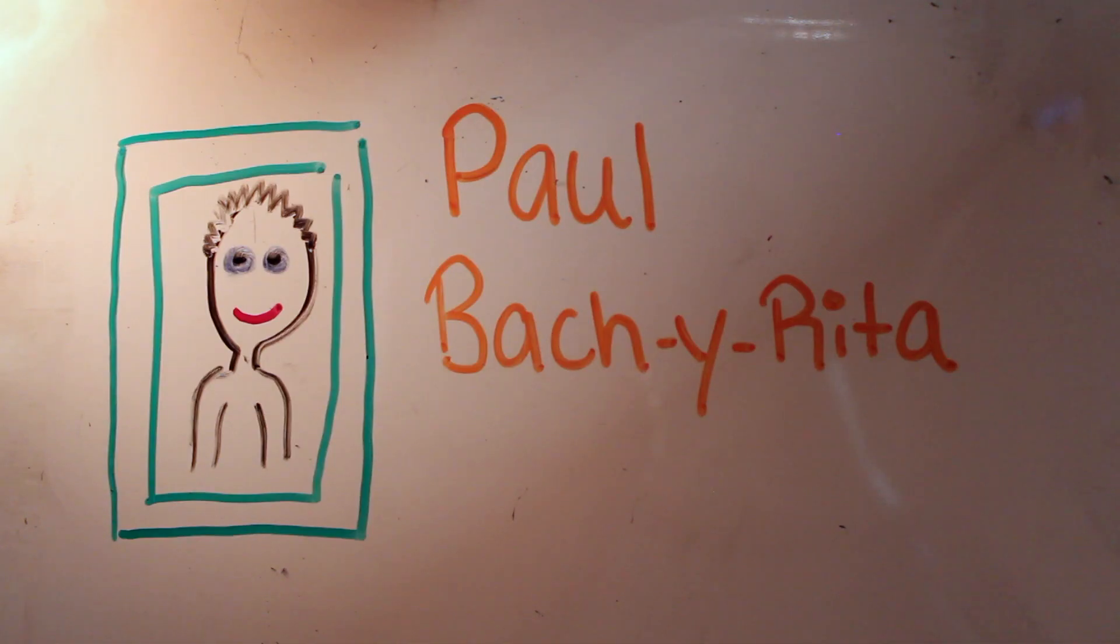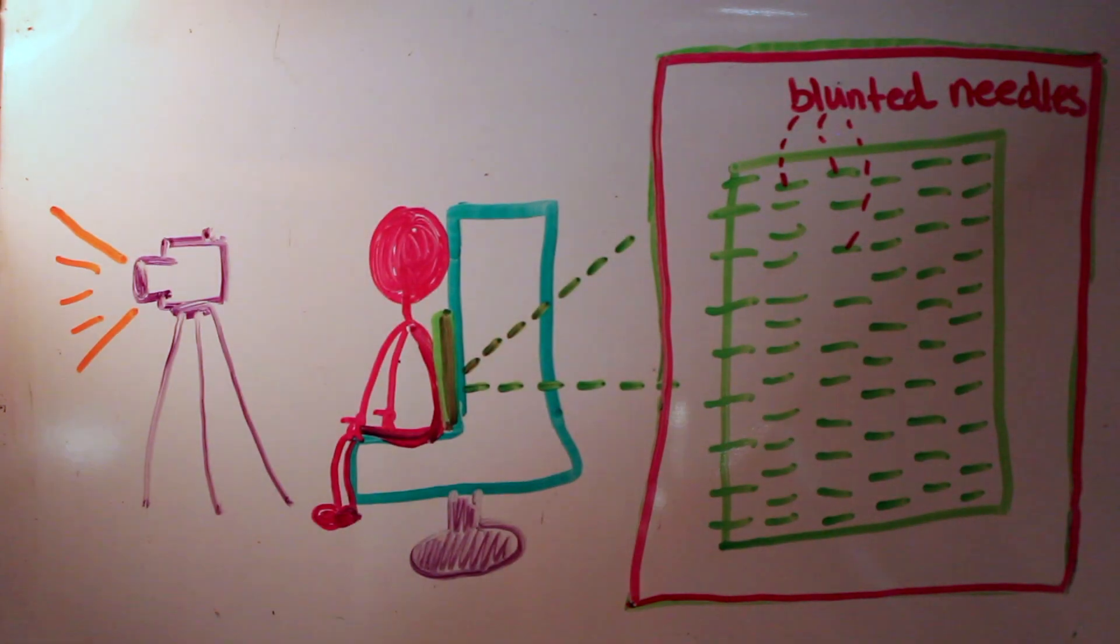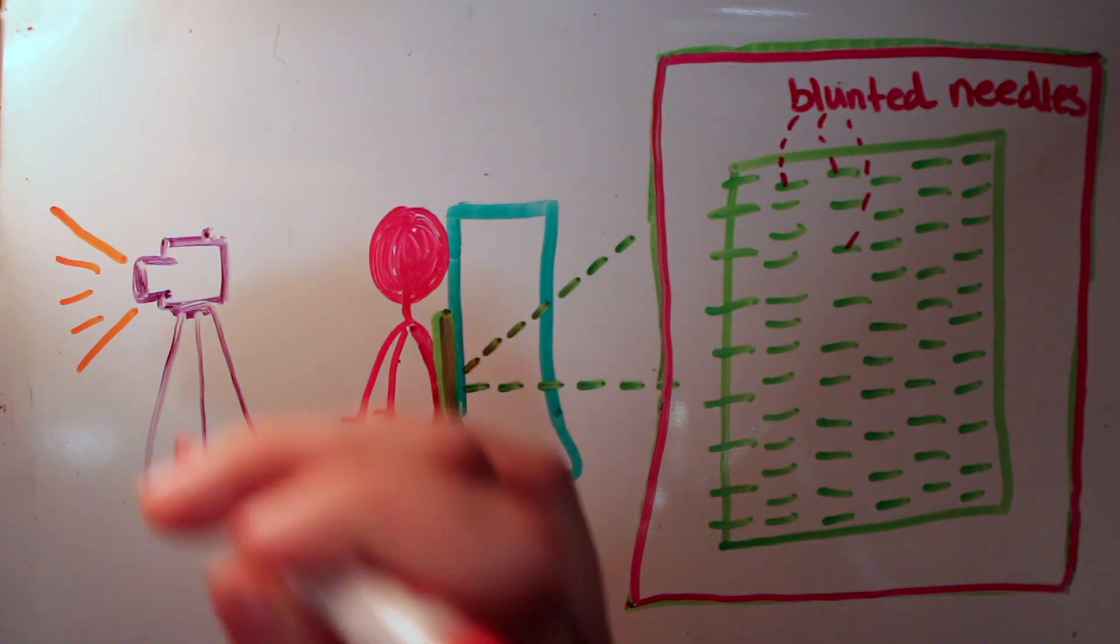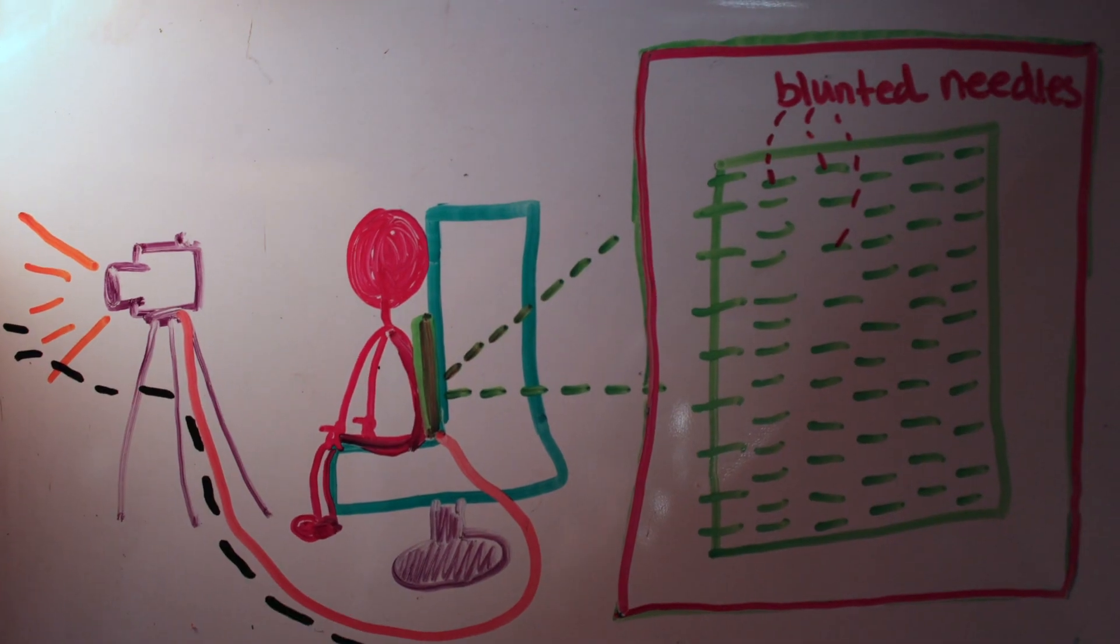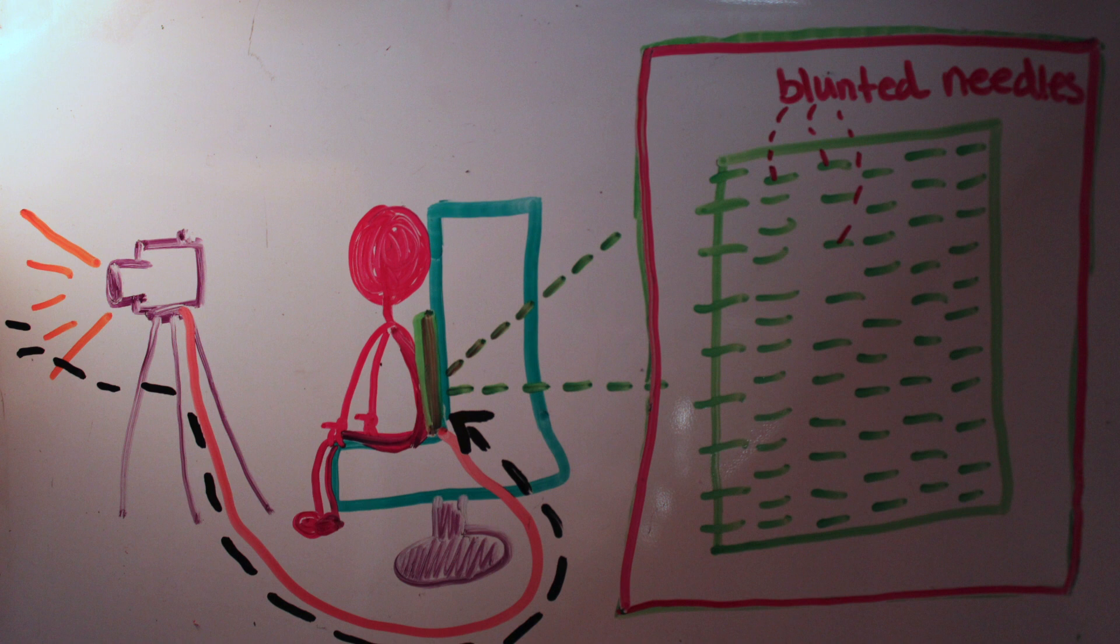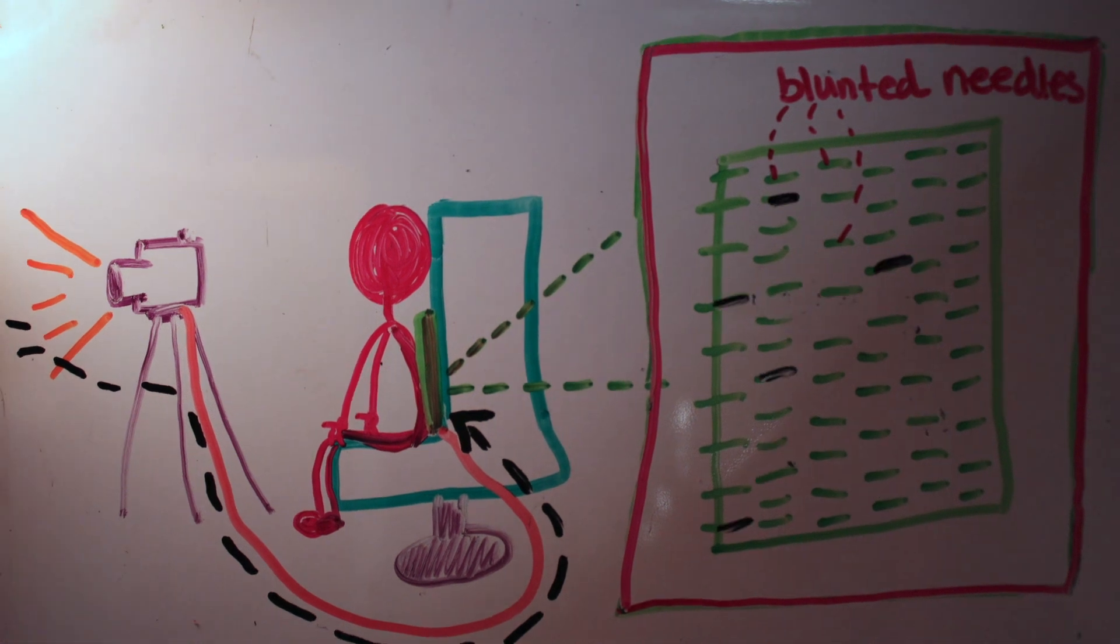So Bakirita developed a device that substituted the sense of sight for the sense of touch. It was an old dentist chair with a matrix of blunted needles against the subject's back. A camera became the eyes of the device, and the visual information from the camera was translated into patterns of stimulation on the subject's back, delivering information about the visual environment onto the surface of the skin.